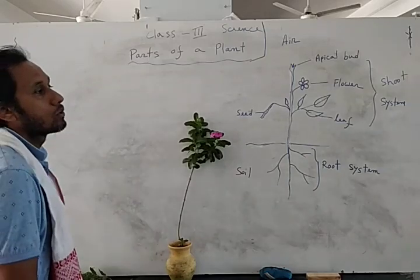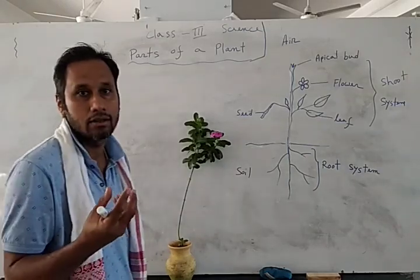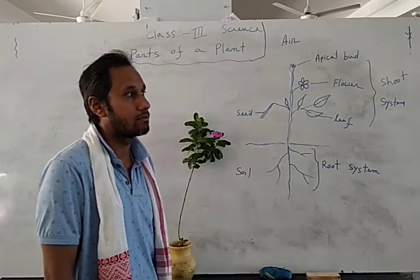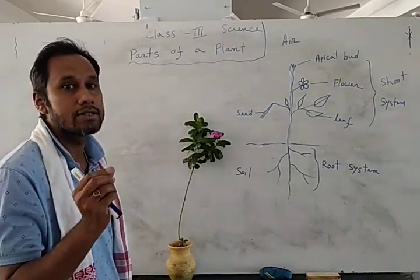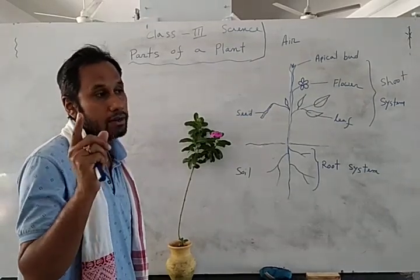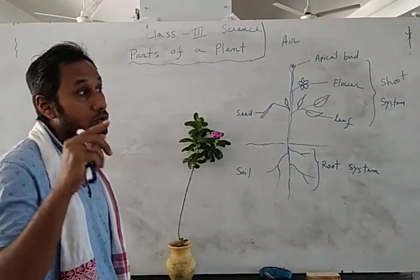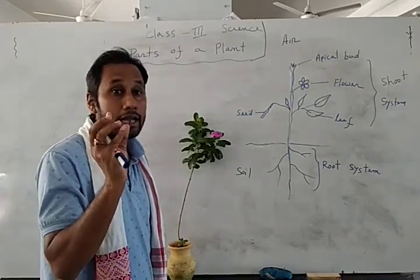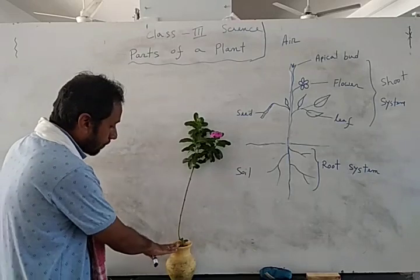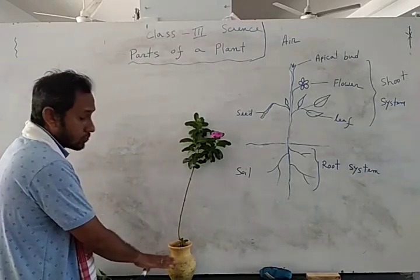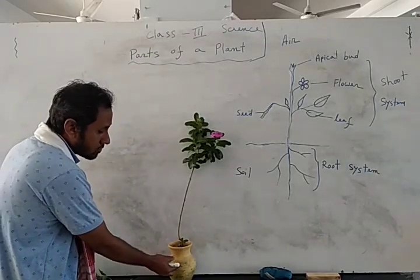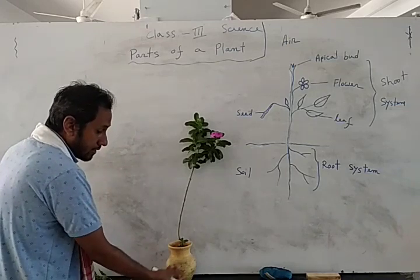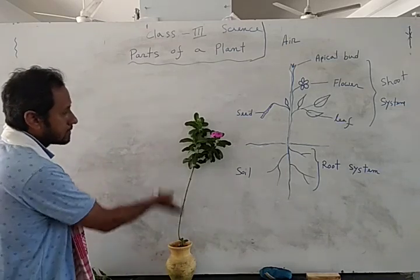The soil inside the pot is garden soil, or loam soil. Loam soil is very important for growing plants because it contains humus. Humus contains dead parts of plants and animals. Inside the pot is loam soil — it contains lots of natural nutrients and manure, and the plants are growing very well.